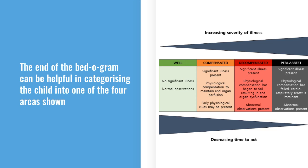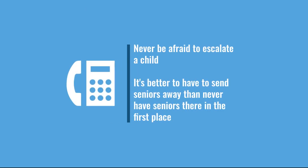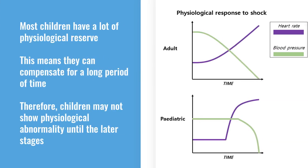If you've got someone peri-arrest or in a decompensated state, call for help immediately. Always err on the side of caution — never be afraid to escalate a sick child. There are risks and benefits to escalating early, but with children, if you escalate and it turns out they're okay, all that happens is a senior comes and has a look and leaves. If you don't escalate, you might miss the sick child. Definitely have a low threshold to escalate.